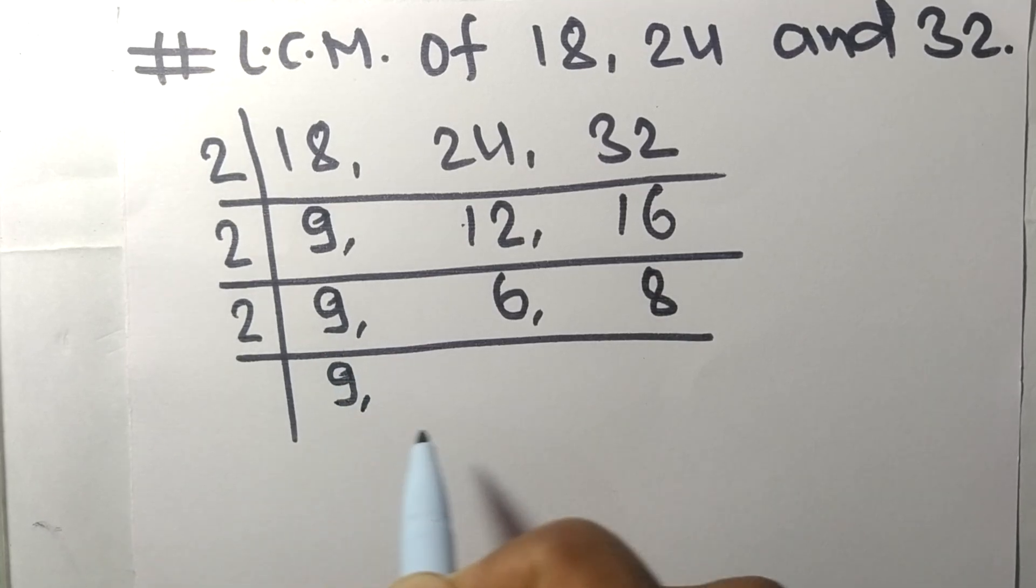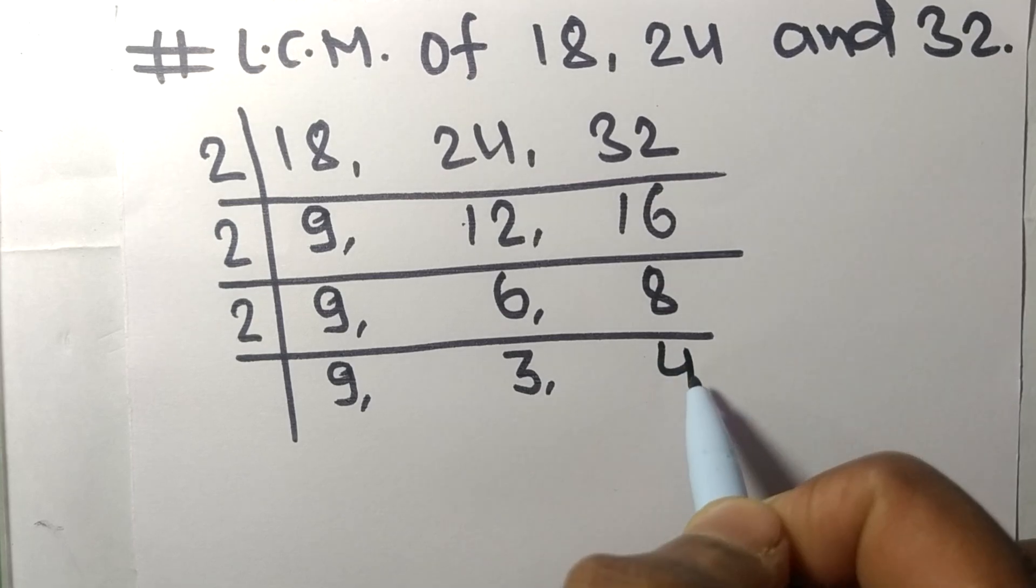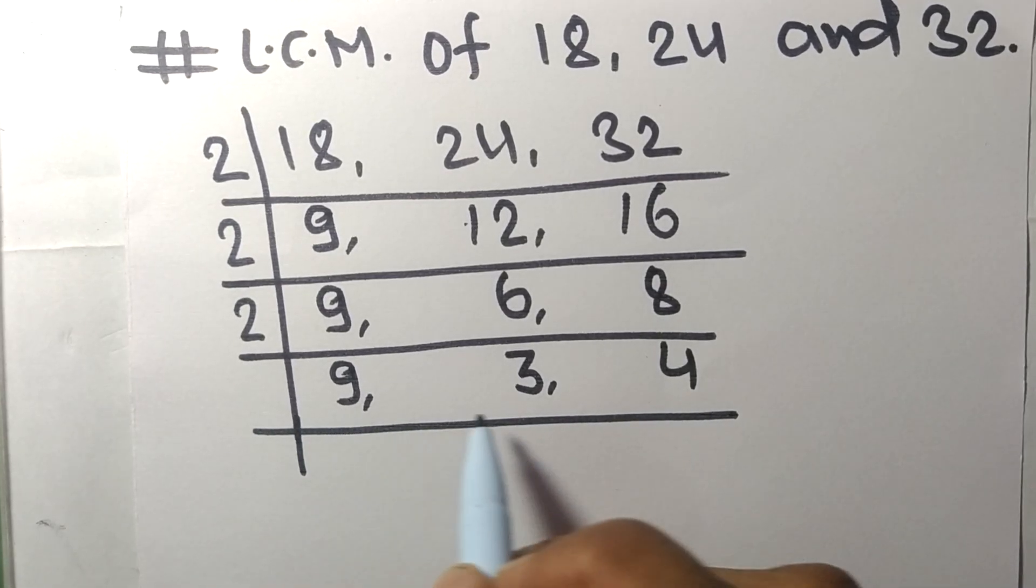2 times 3 equals 6, 2 times 4 equals 8. Now 9 and 3 are divisible by 3.